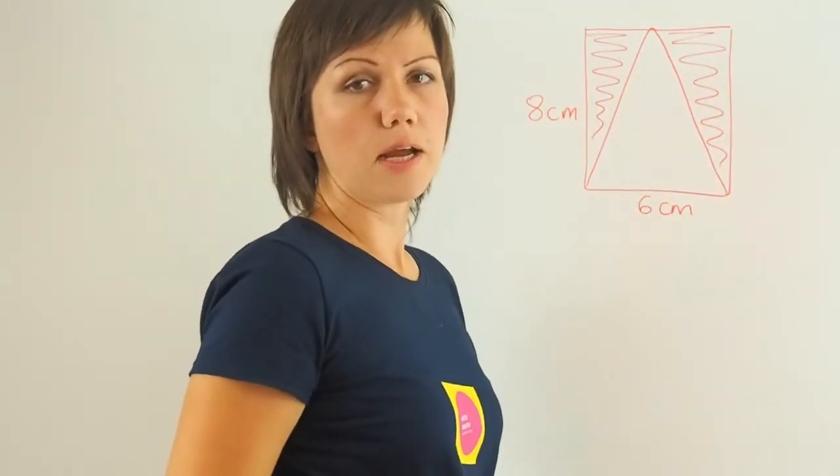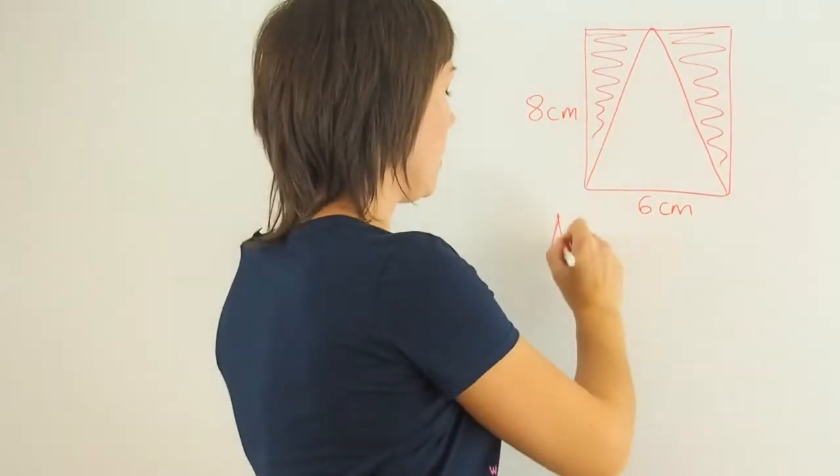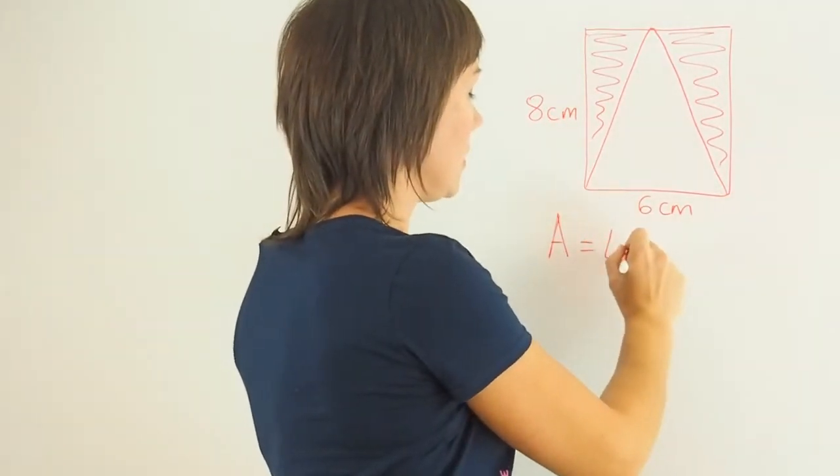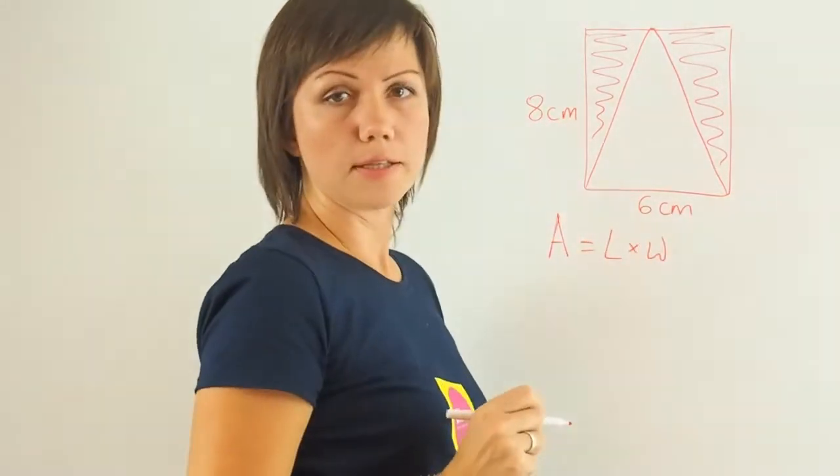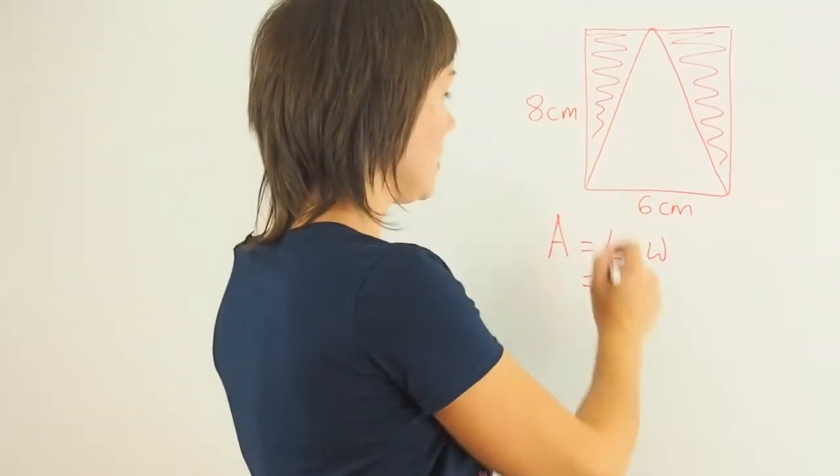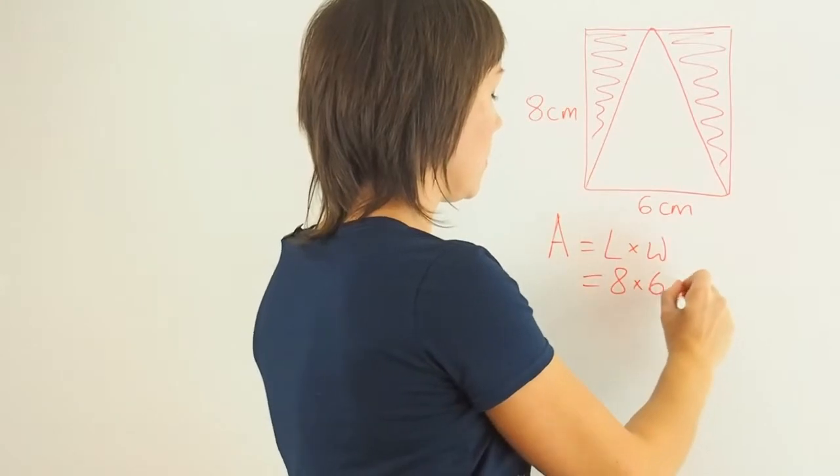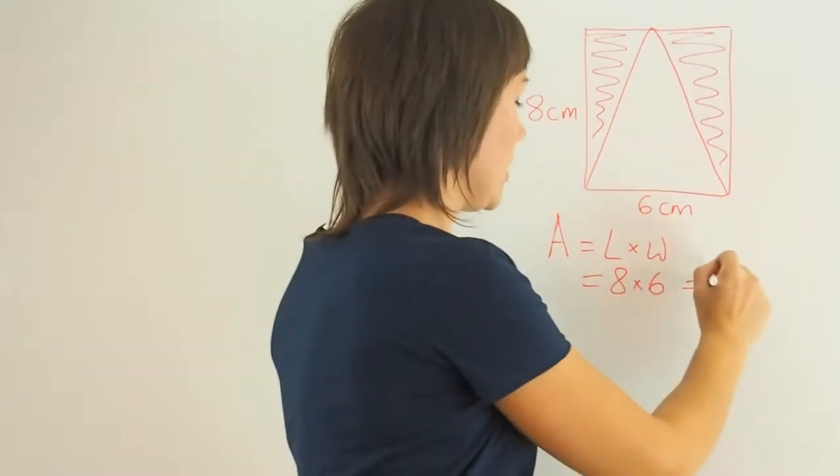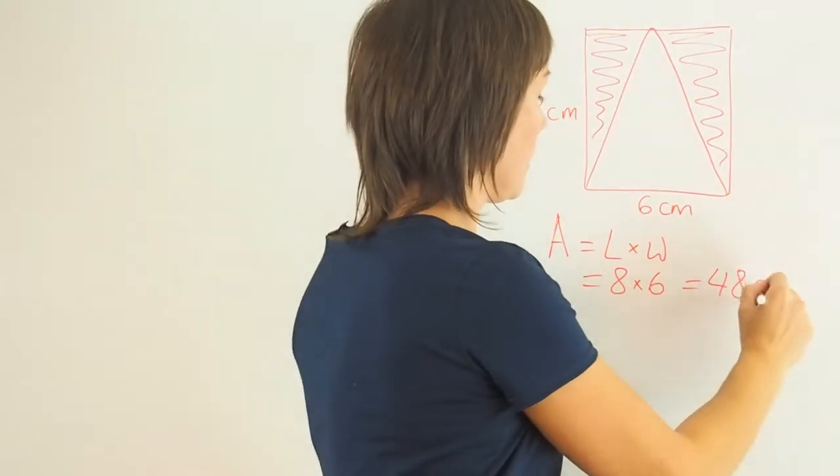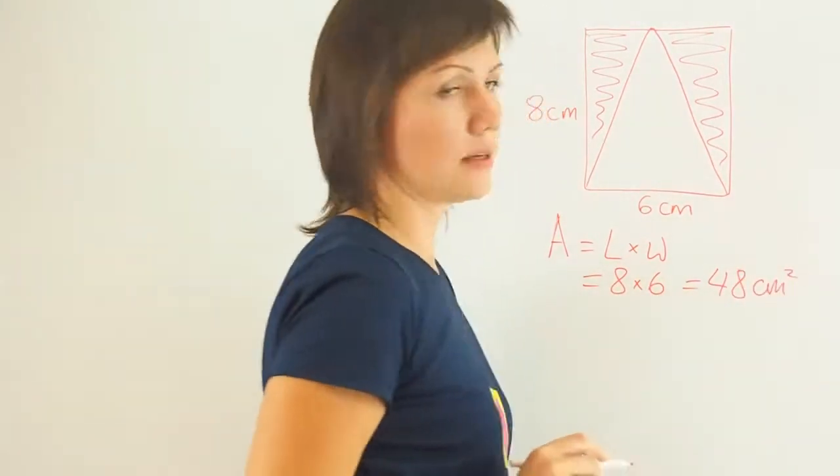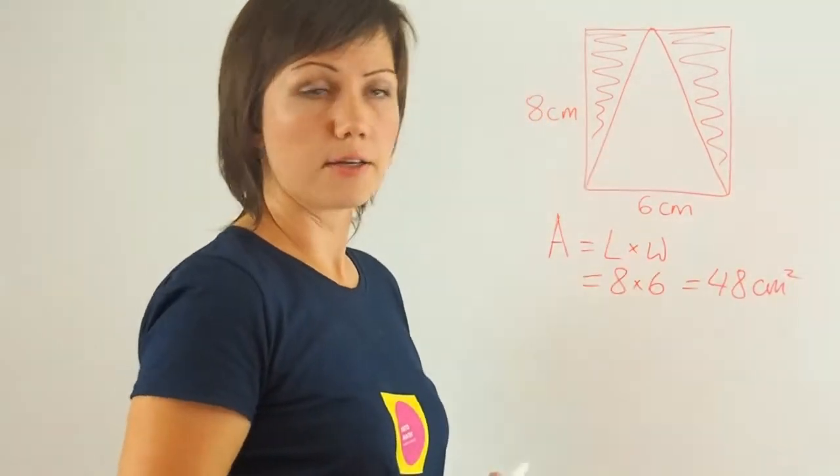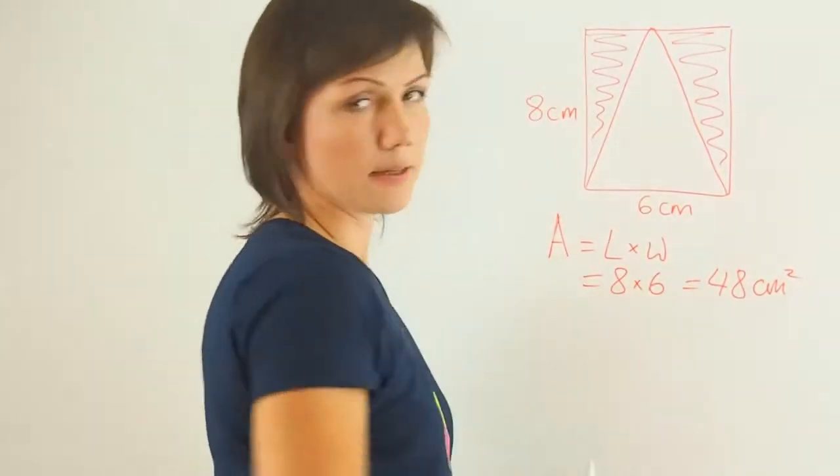Let's start with the rectangle. The area of any rectangle is length times width. In this case, we're multiplying 8 by 6, which is equal to 48. Since area is measured in centimeters squared, then I'm adding the units.